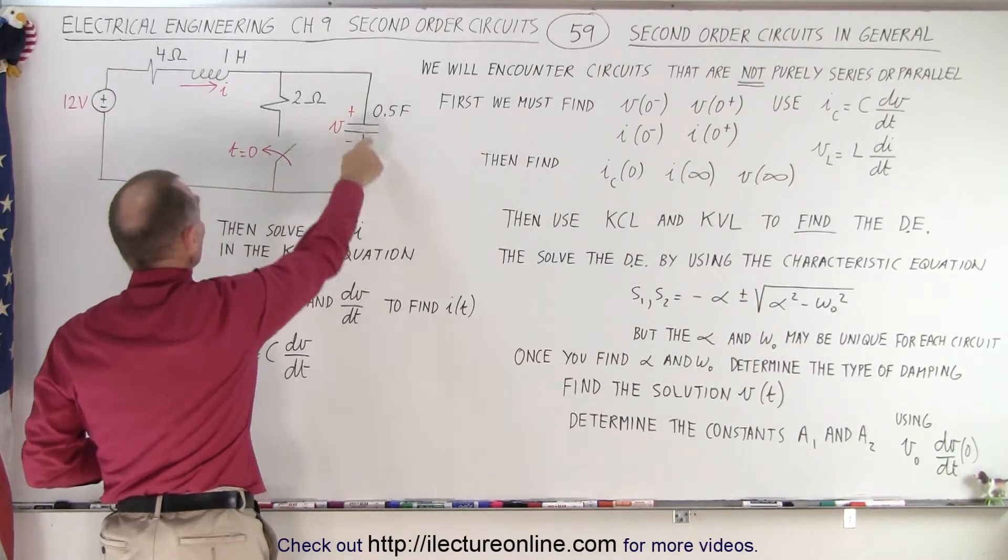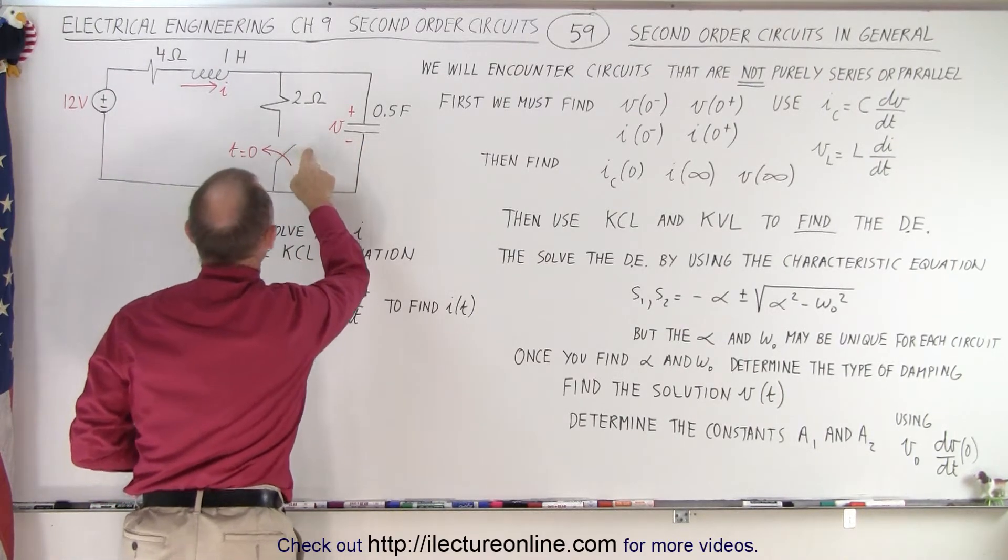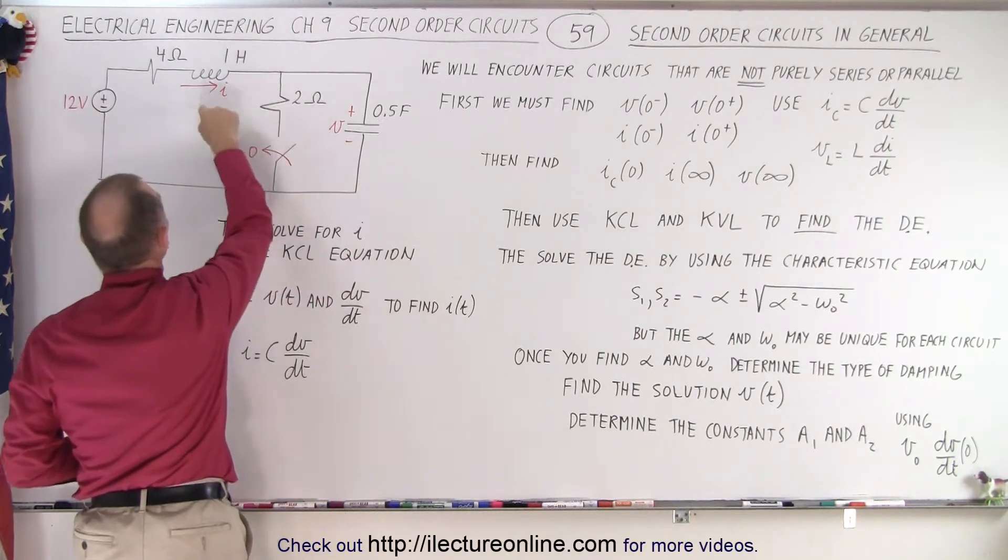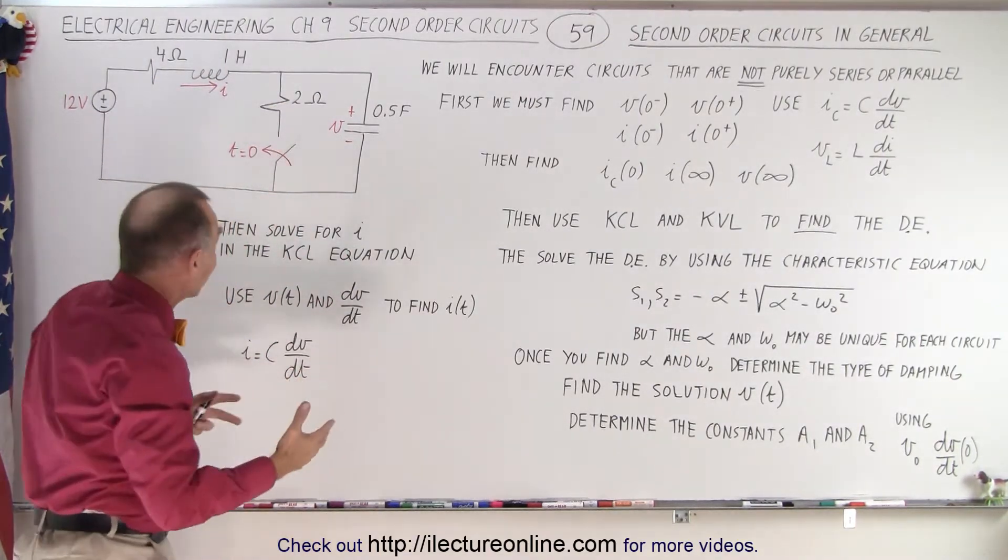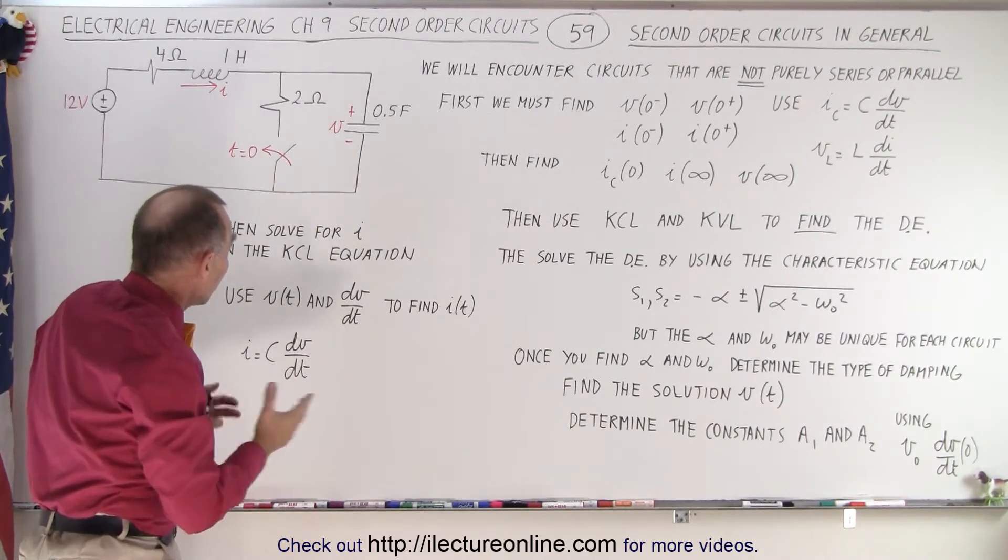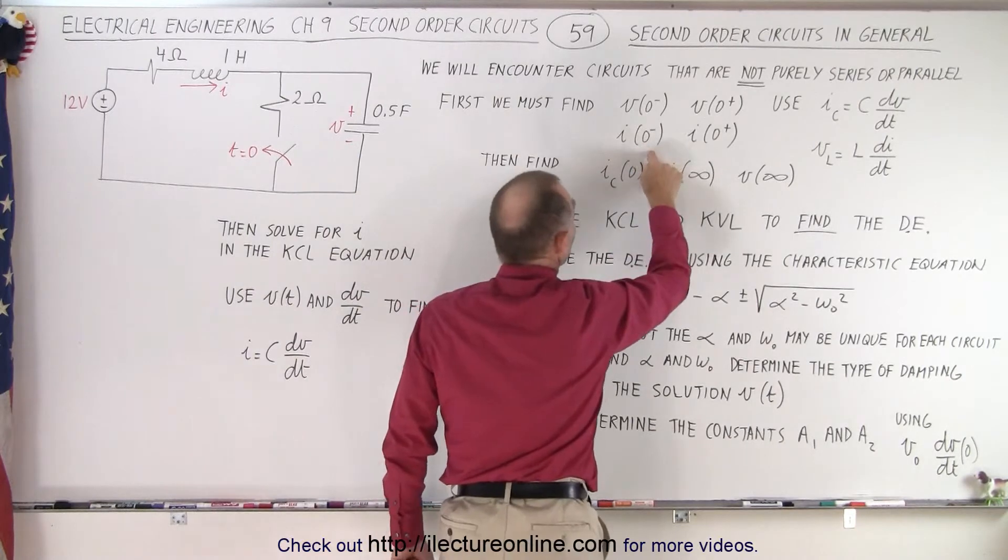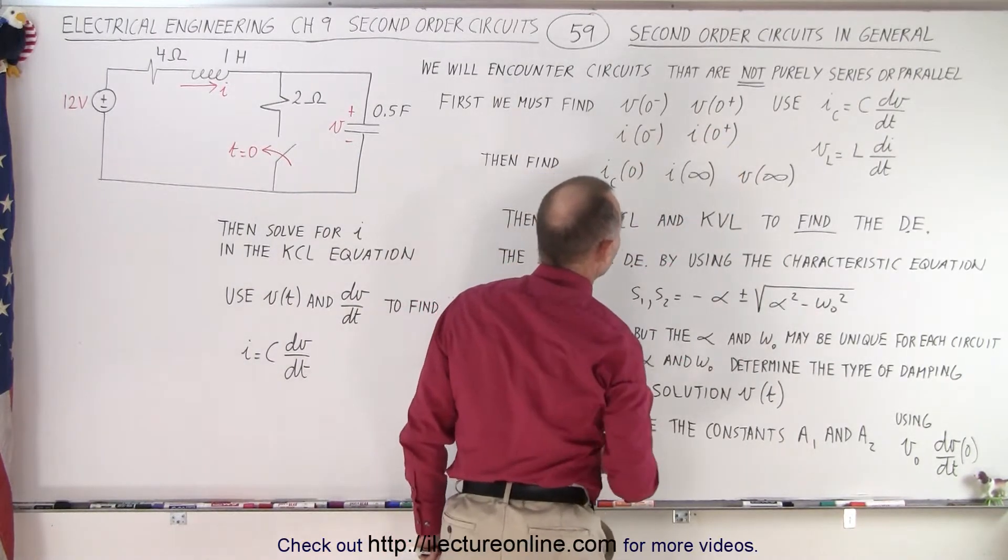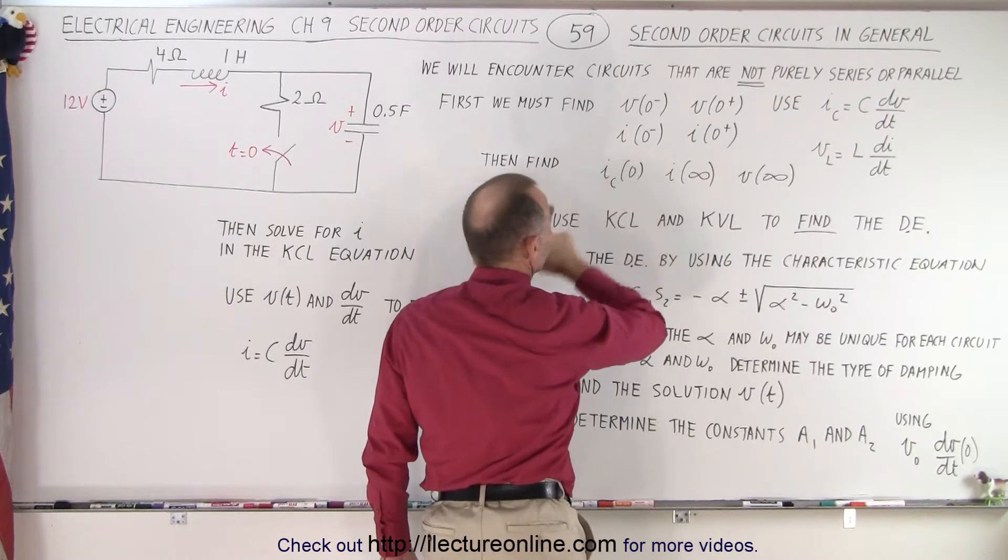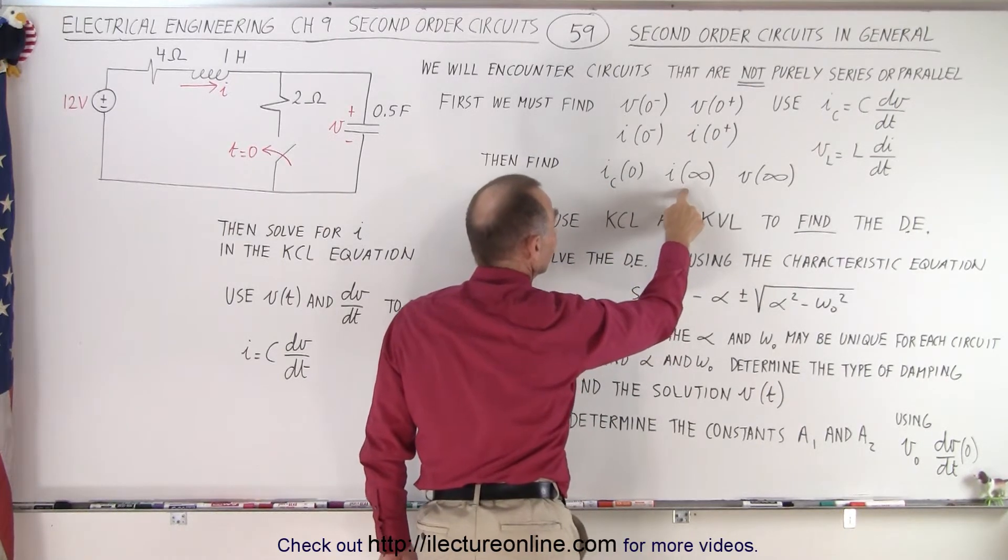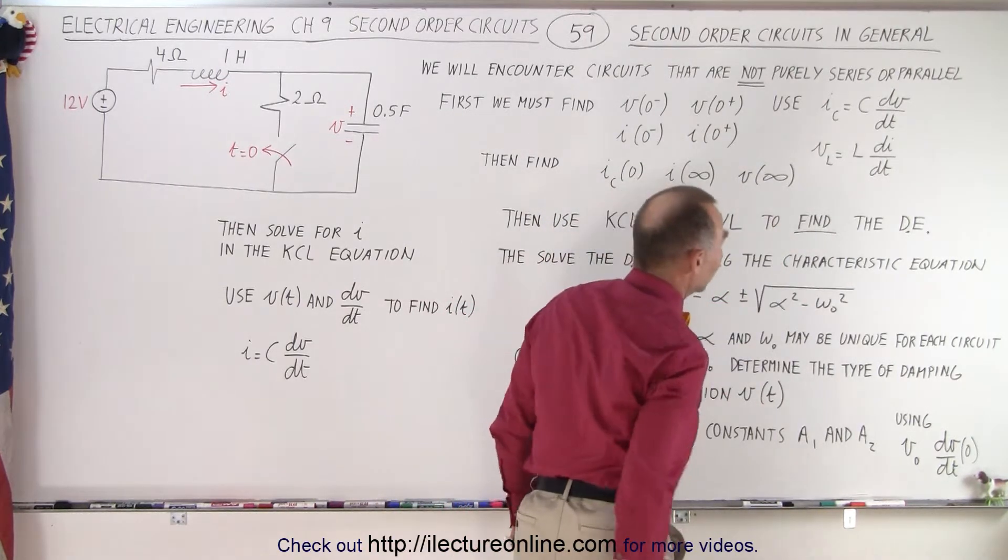The switch closes. Notice that we have a capacitor here in parallel with the resistor, but then the parallel branch is in series with the inductor and this resistor, so it's neither a purely series or purely parallel circuit. When that happens, we need to figure out the initial voltage before and after time equals zero, and then we have to determine the initial current through the capacitor. We have to find the final current through the inductor, and we have to find the final voltage across the capacitor.